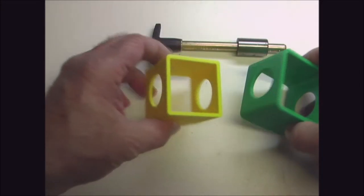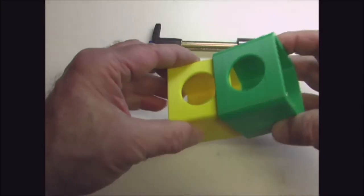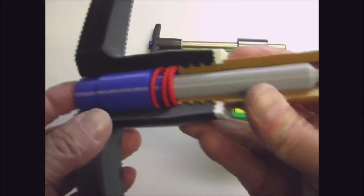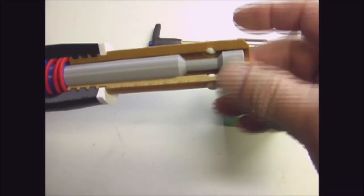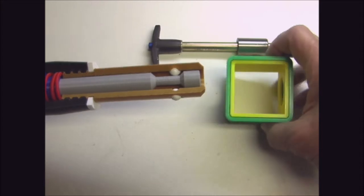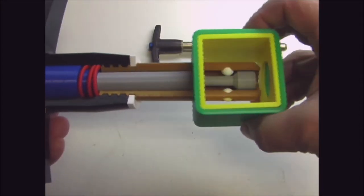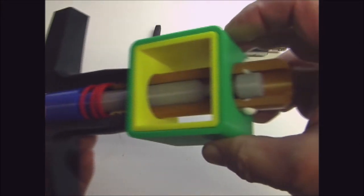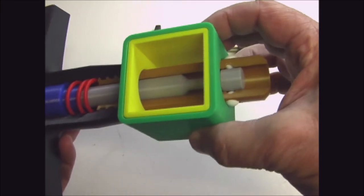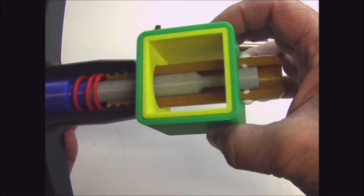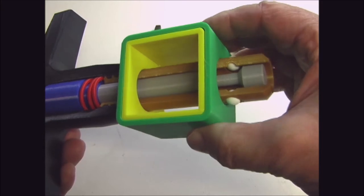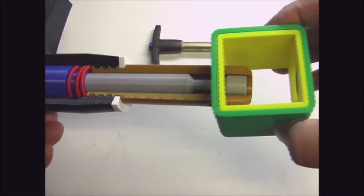If you want to use the pin to lock two objects together, press the button in, which forces the spindle forward, allowing the steel balls to move inward. Place the pin into the object and release the button, and the spindle will move backwards, forcing the steel balls out, locking the object in place. To remove the pin, push the button in again and remove it from the object.